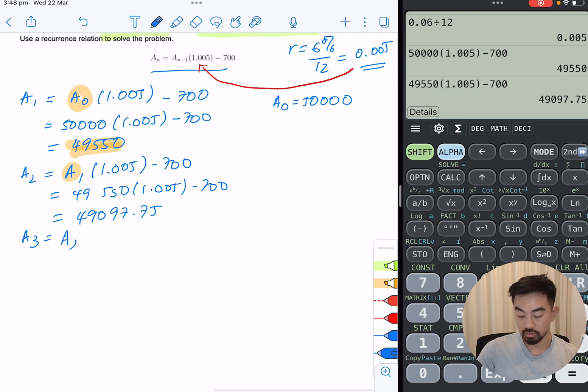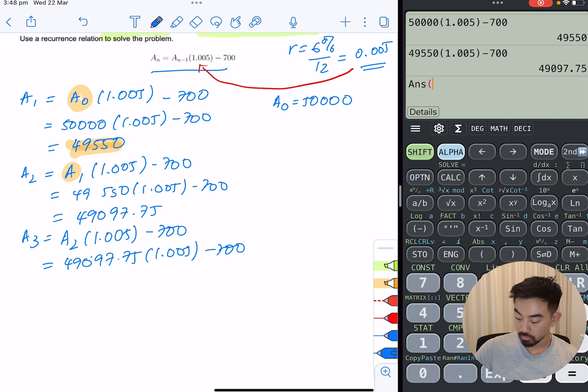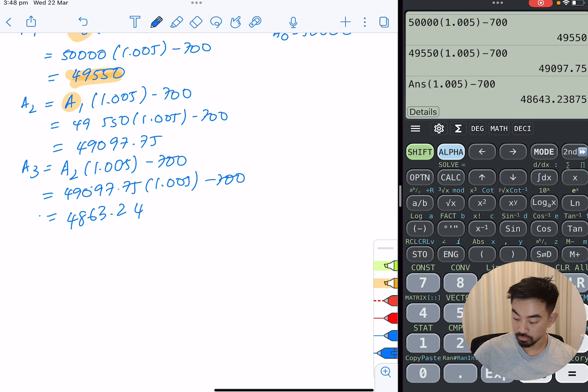A3. So previous, the rate minus 700. $49,550. So that's A3. So your answer function on your calculator is super helpful to this. So you don't have to keep typing out the same number. That is the third month. Forgot a number there. $48,643 and 24 cents.